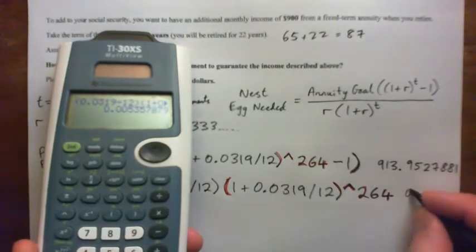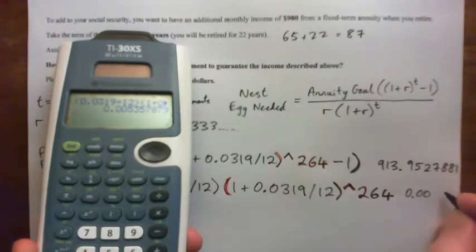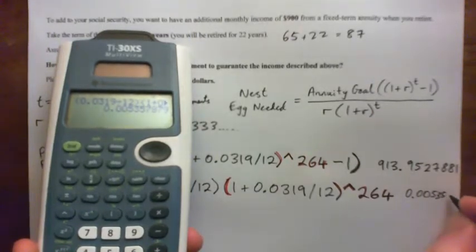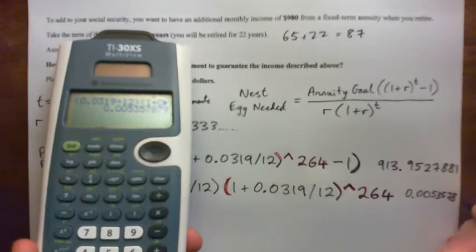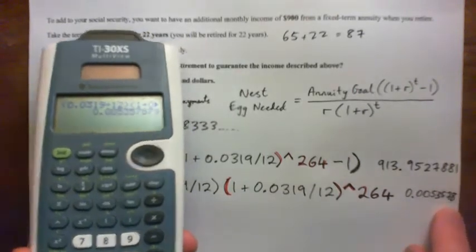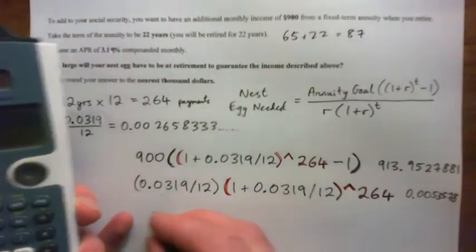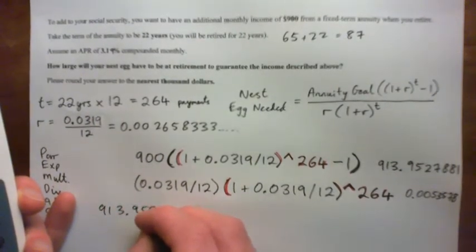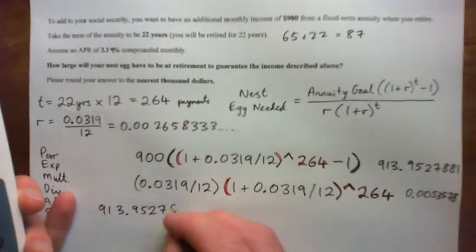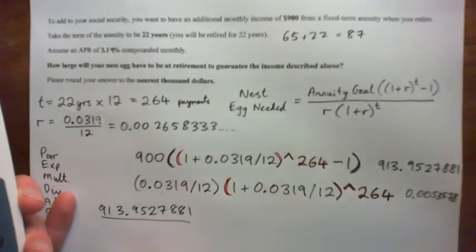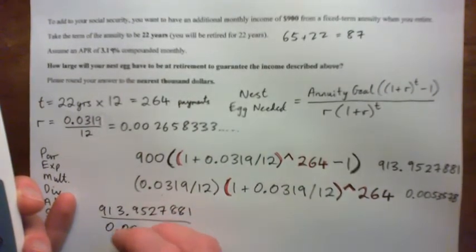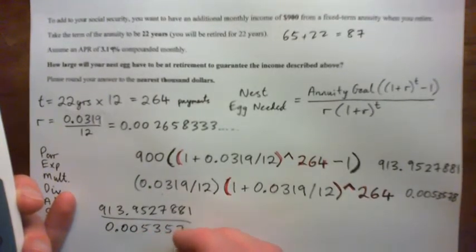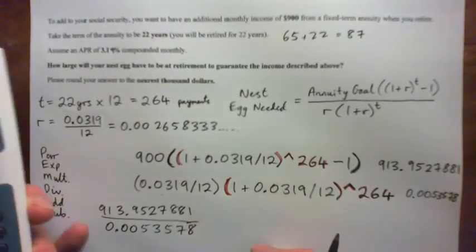So, anyway, 0.005357879. Okay, so this number divided by this number. I could write those out. I could go like 913.9527881 over 0.0053578. That would make sense. So that should give me the correct answer.